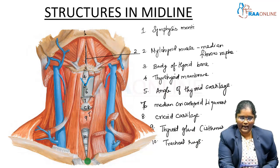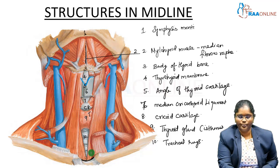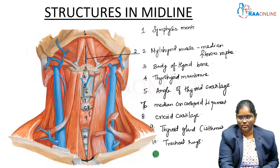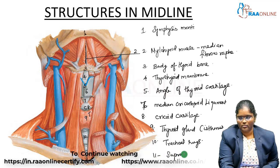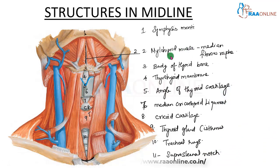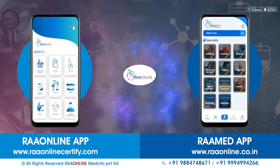At the lower end, you can see a bone — this is the suprasternal notch. In addition to these structures, there are some other structures which will be discussed later.